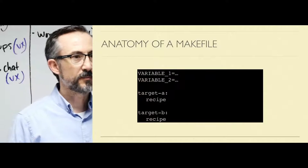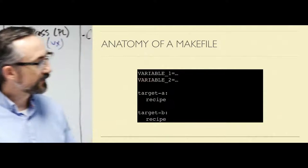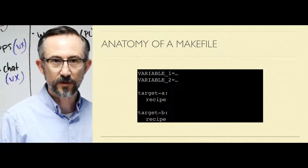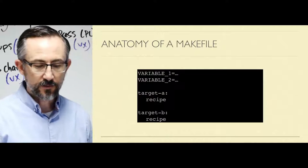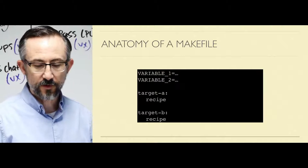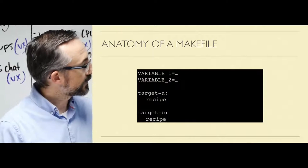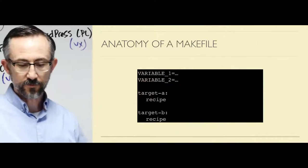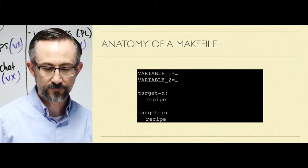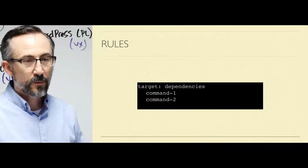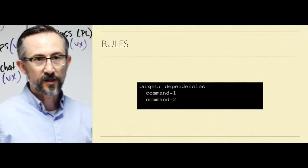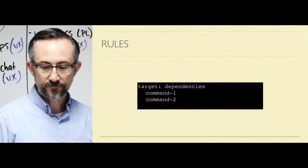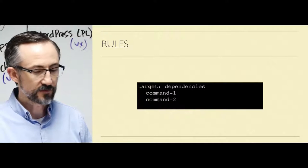I'm sure everyone's looked at a Make file before. This is the basic structure of a very simple Make file. You've got some variable declarations — zero or more of those — and then some rules. Target A and target B along with their recipes are called rules. This Make file has two rules. The purpose of a rule is to tell Make when a target is out of date and what to do about it. We'll discuss this in more detail in a moment.